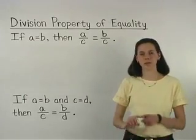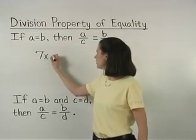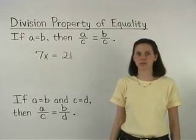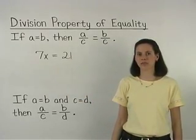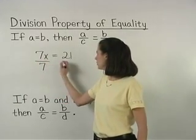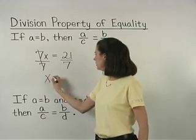For example, if we have the equation 7x equals 21, the division property of equality allows us to divide by 7 on both sides of the equation to get x equals 3.